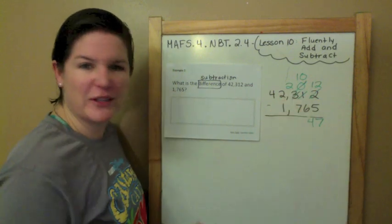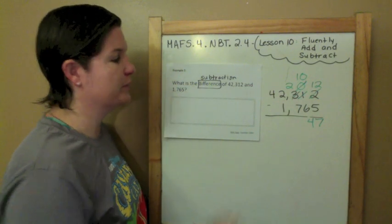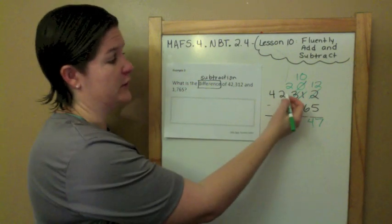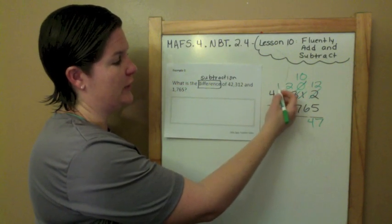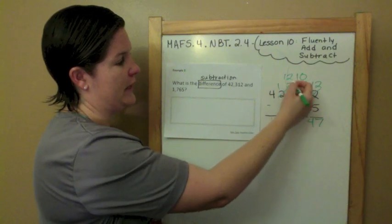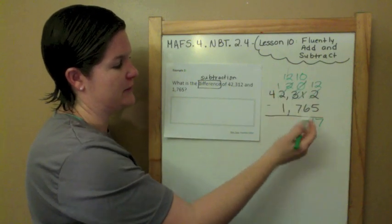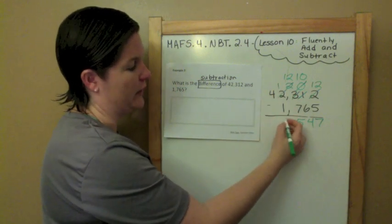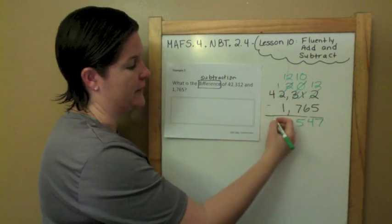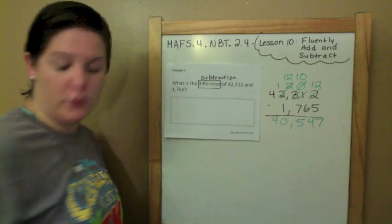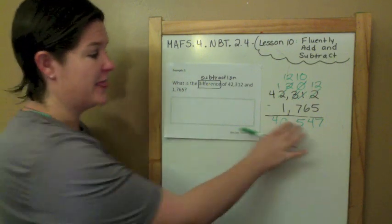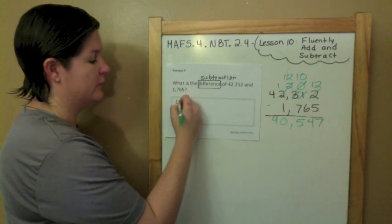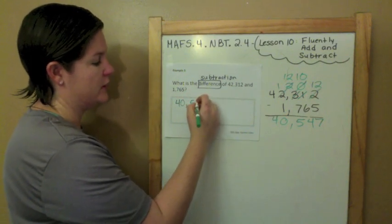2 minus 7 — can't do that either. I created a lot of regrouping on this one! Borrow from next door: 12 minus 7 is 5. 1 minus 1 is 0. And 4 minus nothing is 4. So our answer is 40,547. That is what I put into the answer box.